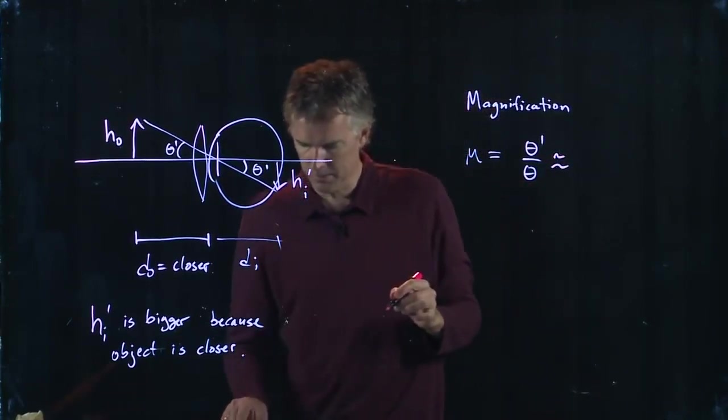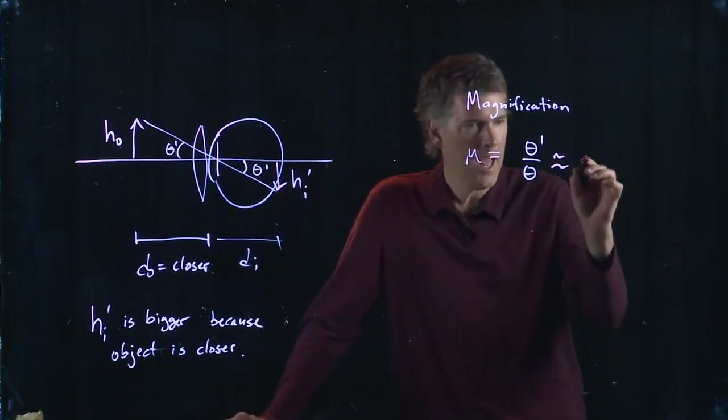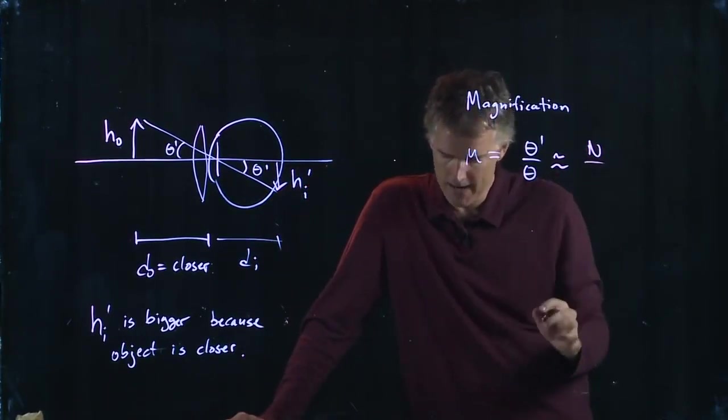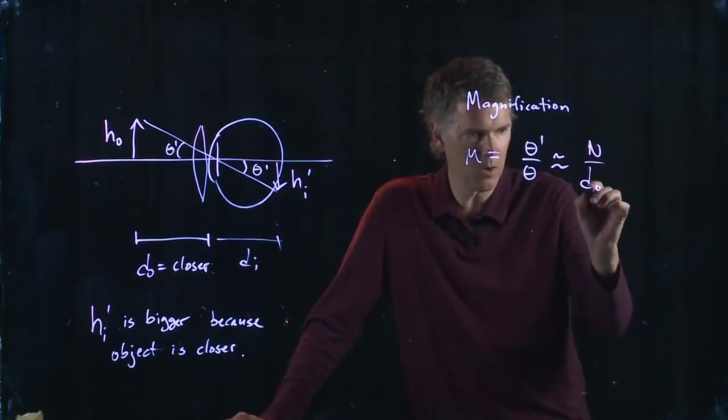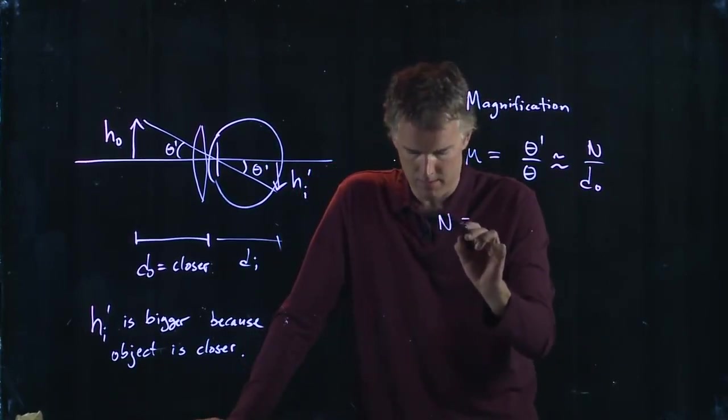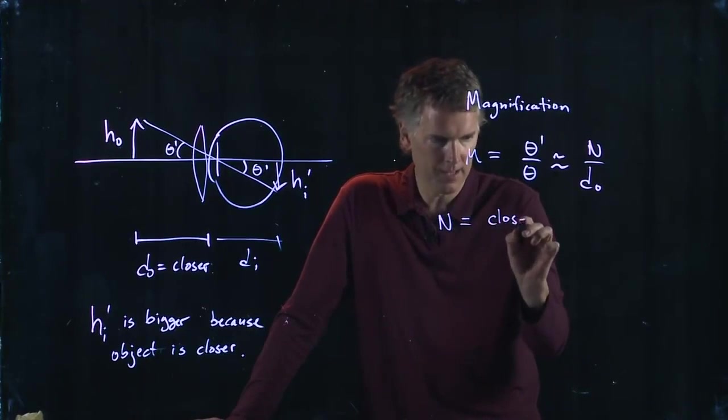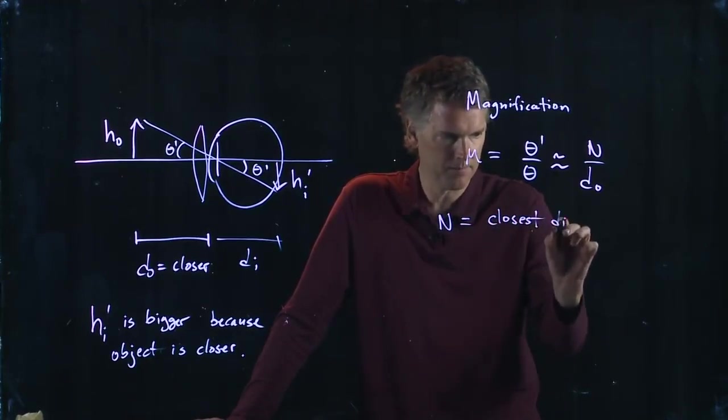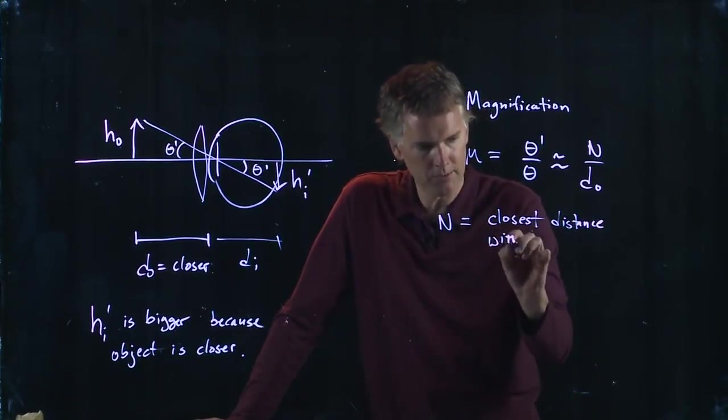It is approximately N divided by d_o, where this N is the following: it's the closest distance without the lens